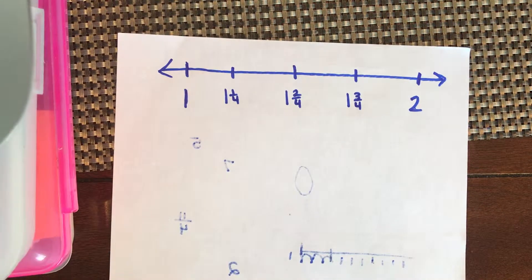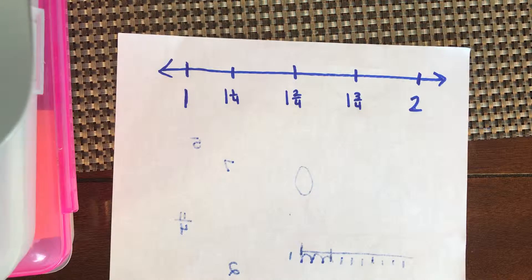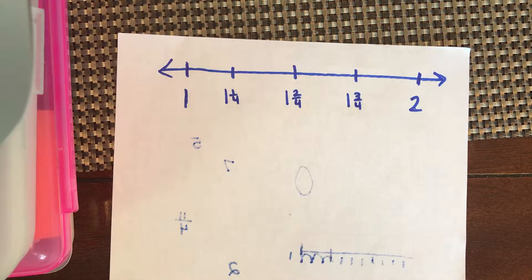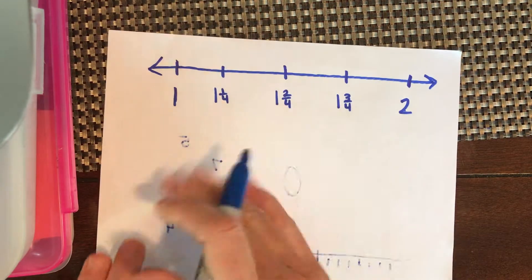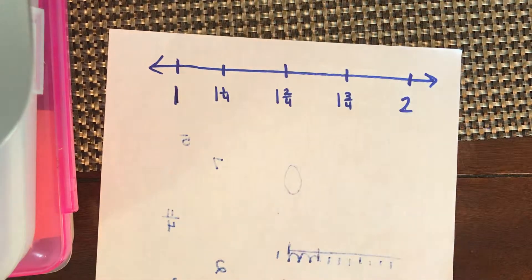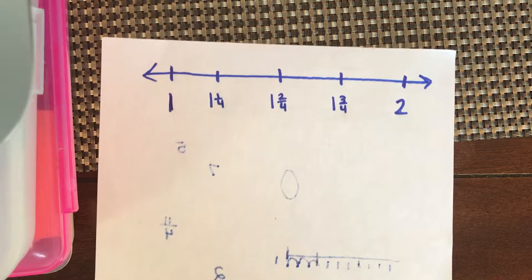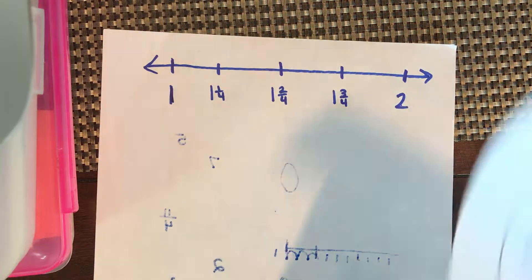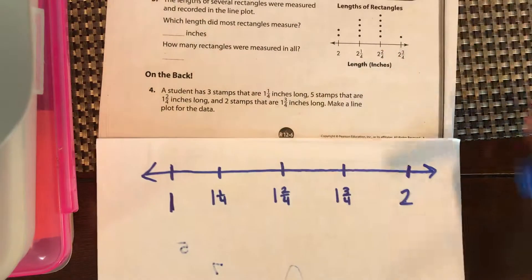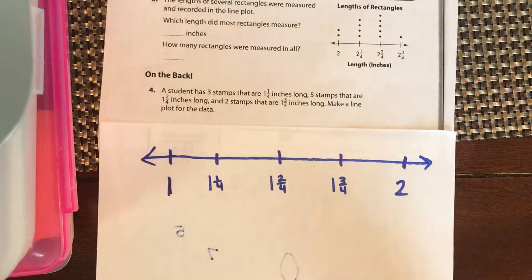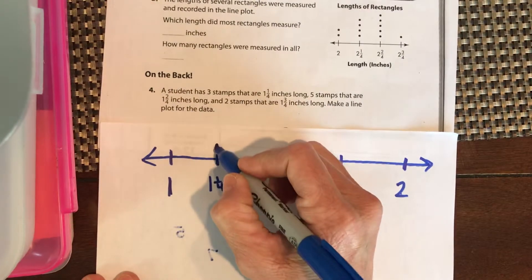This is like when a baby is counted in months — you say six months, a year and two months, two years and two months — you don't keep saying 26 months or 28 months. You count the whole years and then add the months toward the next year. So for our line plot: we have three stamps at one and one-fourth inches, so we place three dots there.